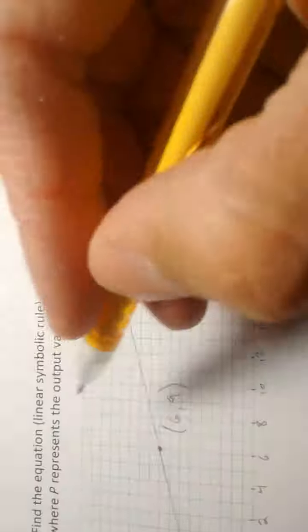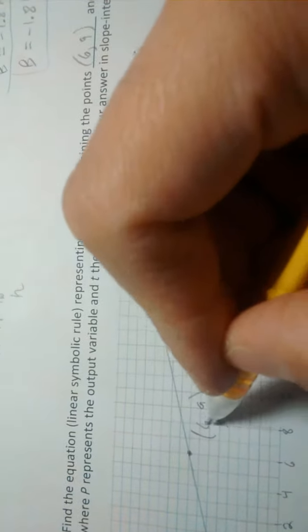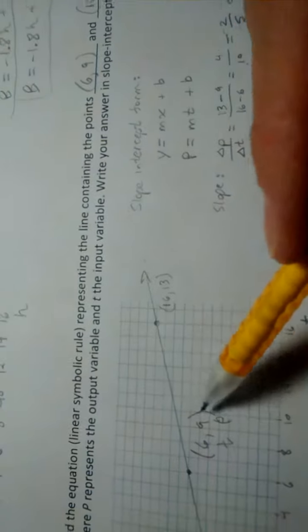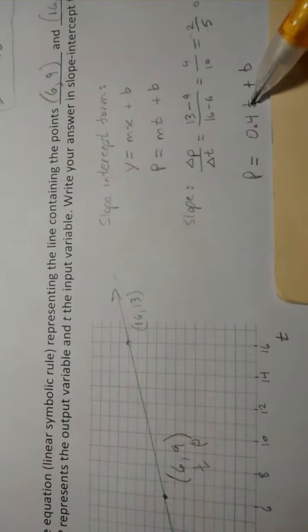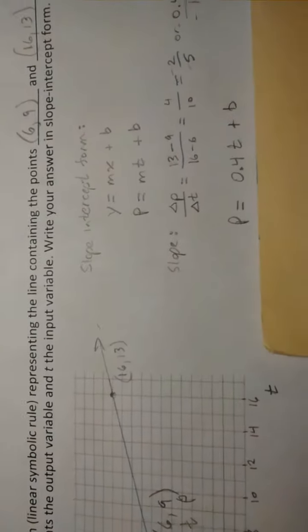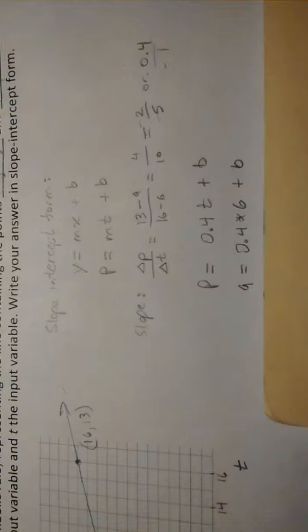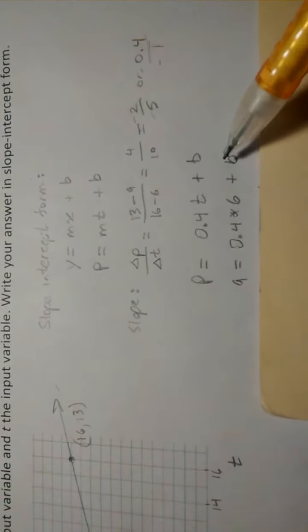Use a point. So this is a P and a T value, input, corresponding output. Replace the P with 9, the T with 6 in here, and you'll have two out of three missing pieces, and you can find the third one. So here's what that looks like. Replace that output with 9, input with 6, and then do some algebra.